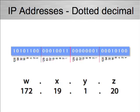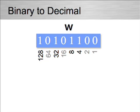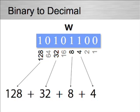We separate each decimal number with a dot. Here we are using an example address of 172.19.1.20, using W, X, Y, and Z to identify the octets. Looking at the first octet, how do we calculate the binary value of 172? Each bit can have a value of 0 or 1 — off or on. Starting from the right, the least significant bit has a decimal value of 0 or 1, the next 0 or 2, and the next 0 or 4. Each subsequent bit doubles in value. To calculate 172, we take the decimal value of each bit that has a 1: 128 plus 32 plus 8 plus 4 equals 172.